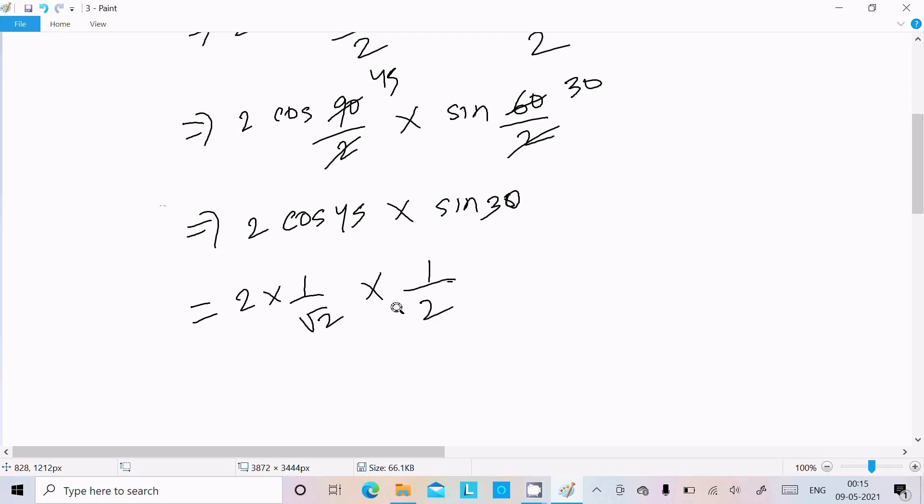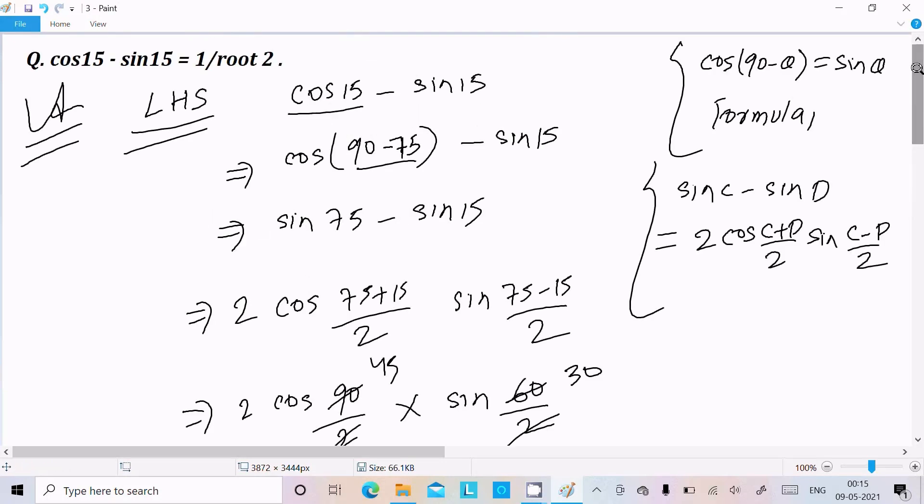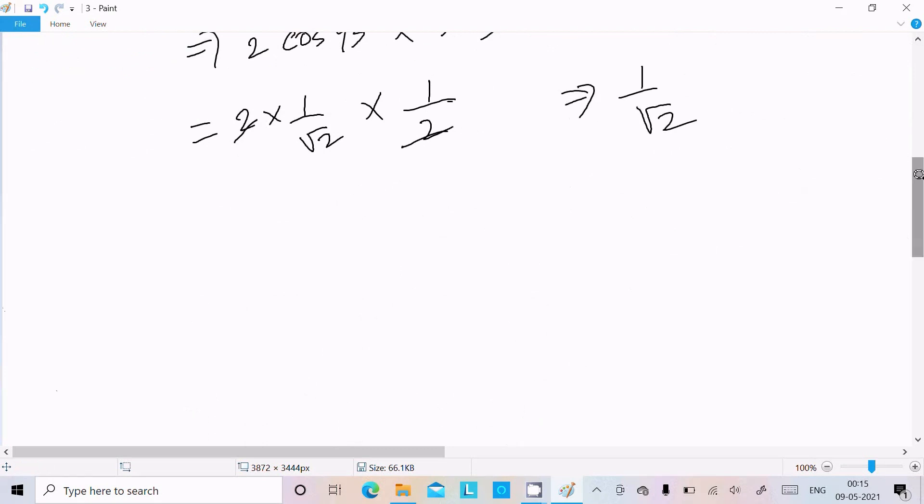Substituting the values: 2 × (1/√2) × (1/2) = 1/√2. Therefore, LHS = RHS = 1/√2. It's proven.